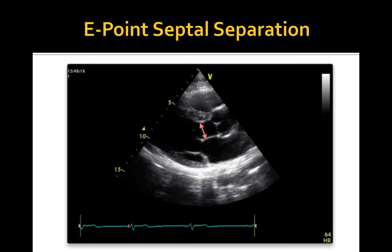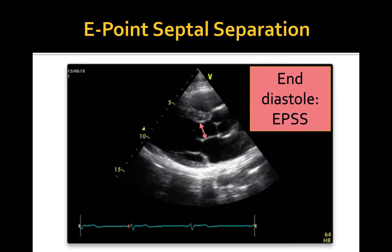Motion of the anterior leaflet of the mitral valve can also be used to assess LV contractility. In a normal contractile state, the anterior mitral leaflet can be seen in the parasternal long axis view touching or closely approaching the septal endocardium in early diastole. The degree of excursion of the mitral valve directly correlates with the contractile state of the left ventricle. As cardiac contractility decreases, the distance between the mitral valve and septum increases due to poor diastolic LV expansion.